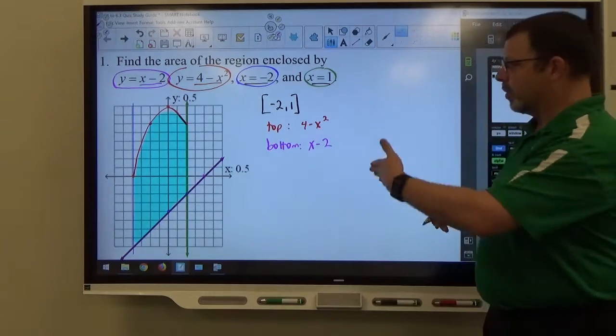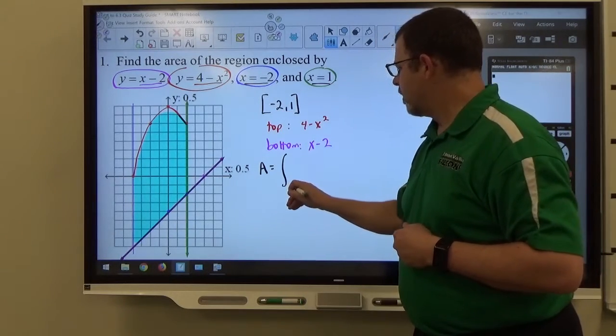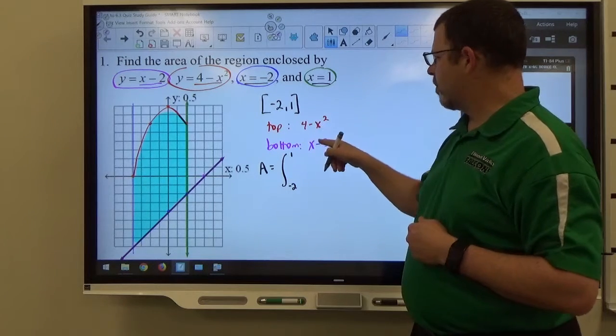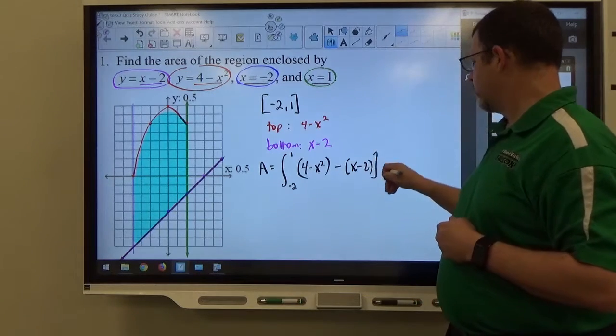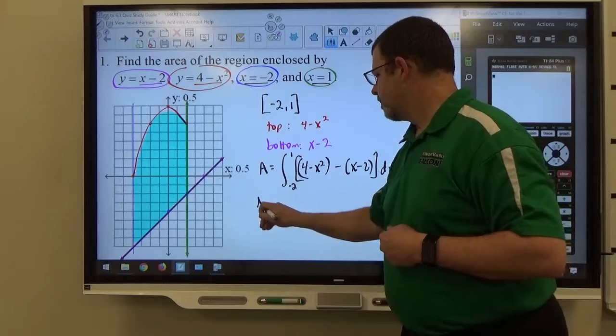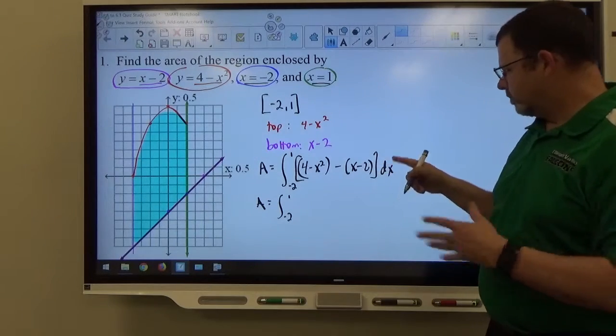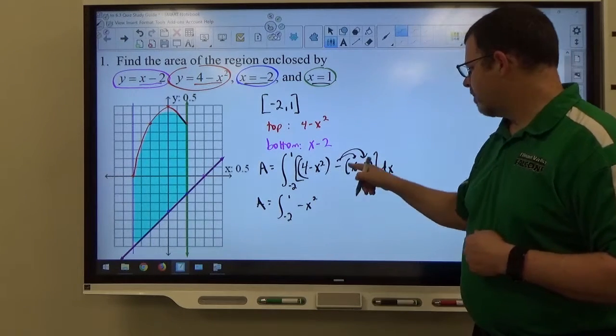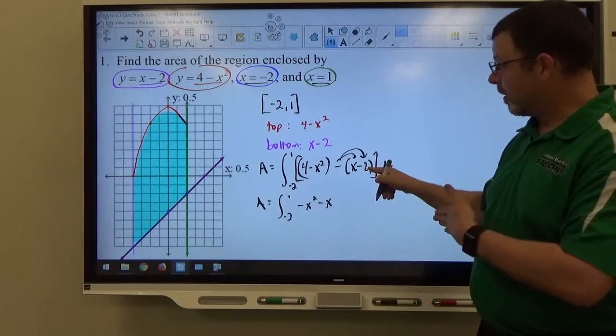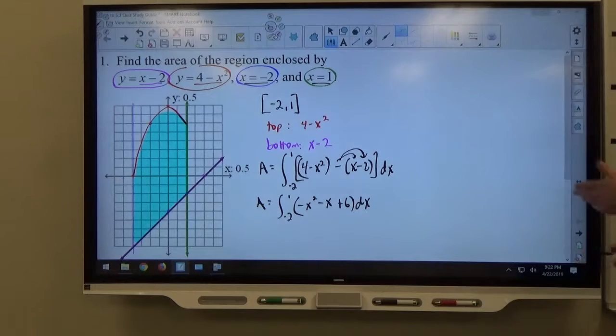So we construct an integral with this knowledge. The area between the parabola and the line will be the integral from negative 2 to 1 of the top function, 4 minus x squared, minus the bottom function, x minus 2, with respect to x. Next thing I would do is combine like terms. Distribute this minus sign through, I like descending order also. So negative x squared, I've got a minus x, and this minus minus 2 becomes plus 2, add it to the 4 to get plus 6. So that's the constructed integral.